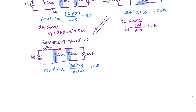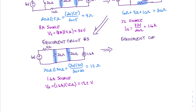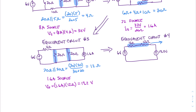For our last source transformation, we take this 1.6-amp current source and turn it into a voltage source with a series resistance, which puts the equivalent resistance of 12 ohms in series with this 4-ohm resistor. For the 1.6-amp source, the equivalent voltage V sub s equals 1.6 amps times 12 ohms, which equals 19.2 volts. That gives us our fourth equivalent circuit: our 6-volt source, our 4-ohm resistor, and our 12-ohm resistor in series with our 19.2-volt source. Our 4-ohm and 12-ohm resistors together equal a total of 16 ohms.